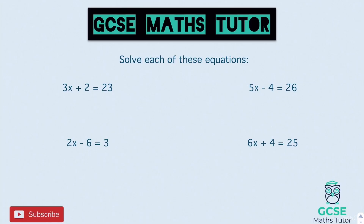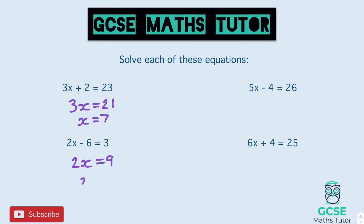For the first one: subtract 2 from both sides, giving 3x equals 21, then divide by 3 to get x equals 7. For the next one: add 6 to both sides (since it's negative 6), giving 2x equals 9. Dividing by 2 gives x equals 9 over 2, which simplifies to 4 and a half or 4.5.